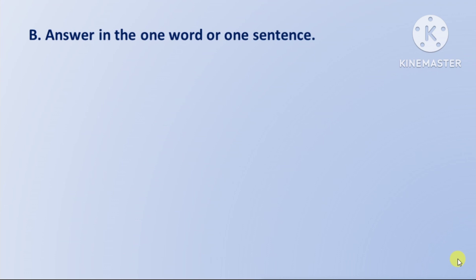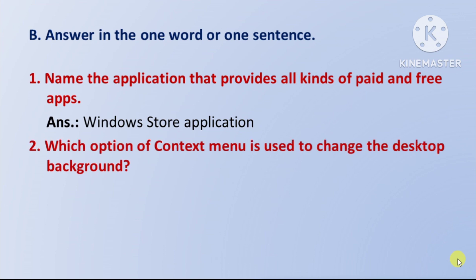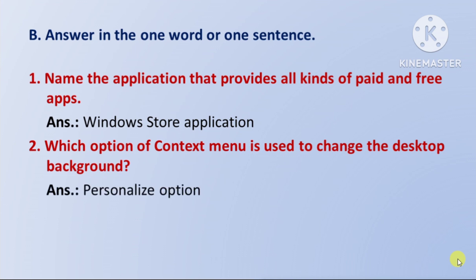Answer in one word or one sentence. First question: name the application that provides all kinds of paid and free apps — us application ka name likho jo sabhi prakar ke free aur paid apps ko provide karta hai. Answer: Windows Store application.